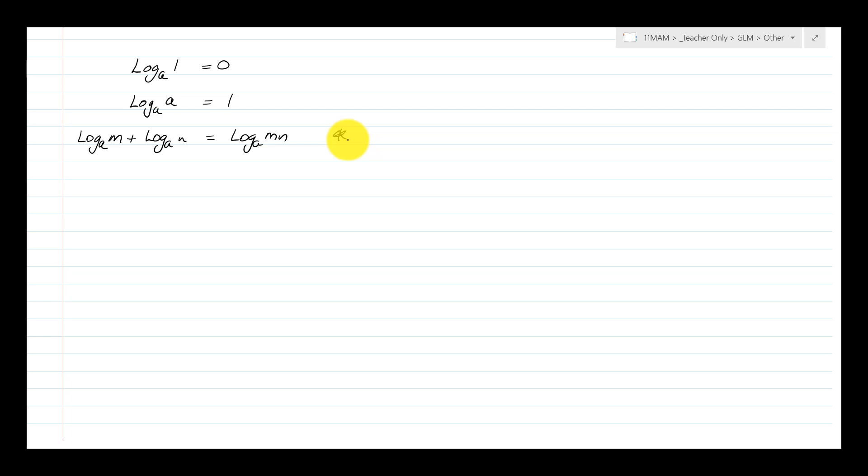one way to think about it is that they are opposite to the index laws. So in the index laws if you multiply two indices you add them. In log laws if you add two logs, you multiply the bits inside the logs. And the proof will show you why that happens. But for now that's the log law.